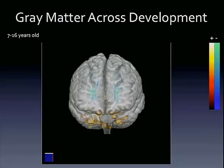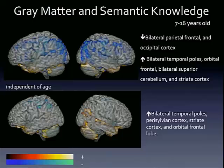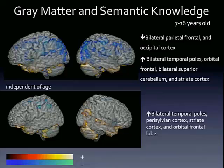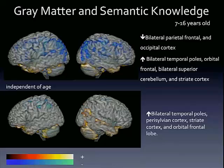Now looking at the relationship between gray matter and semantic knowledge — here we have the association between gray matter and semantic knowledge, and below controlling for age. We see more diffuse decreases in gray matter density. Once you control for age, a lot of that is eliminated, though there is still some relationship in the parietal lobe. As far as increases, you have the orbital frontal cortex, anterior temporal lobe — possibly related to the semantic hub — and also some cerebellum increases in gray matter density. Those are maintained when controlling for age, unlike some results in the previous sample. In fact, we see additional correlations in the right parasylvian cortex as well.